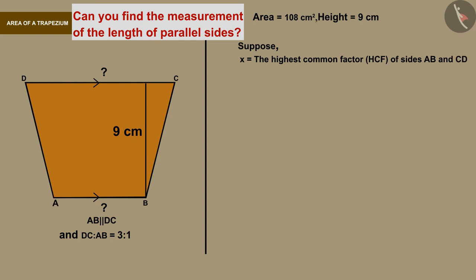So we can say that the measurements of AB and CD are x and 3x respectively. The area of the pot is given as 108 square centimeters.